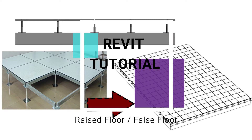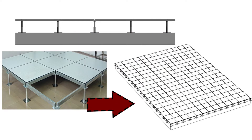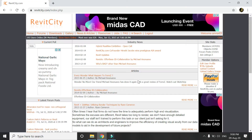Today's tutorial is about how to create a parametric false floor, also known as a raised floor, in your project files. The method is quite easy. Before we start, please like and share my videos, leave a comment below, and subscribe to my channel. If you have any difficulty or query related to Revit, you can ask me anytime. Now let's start.